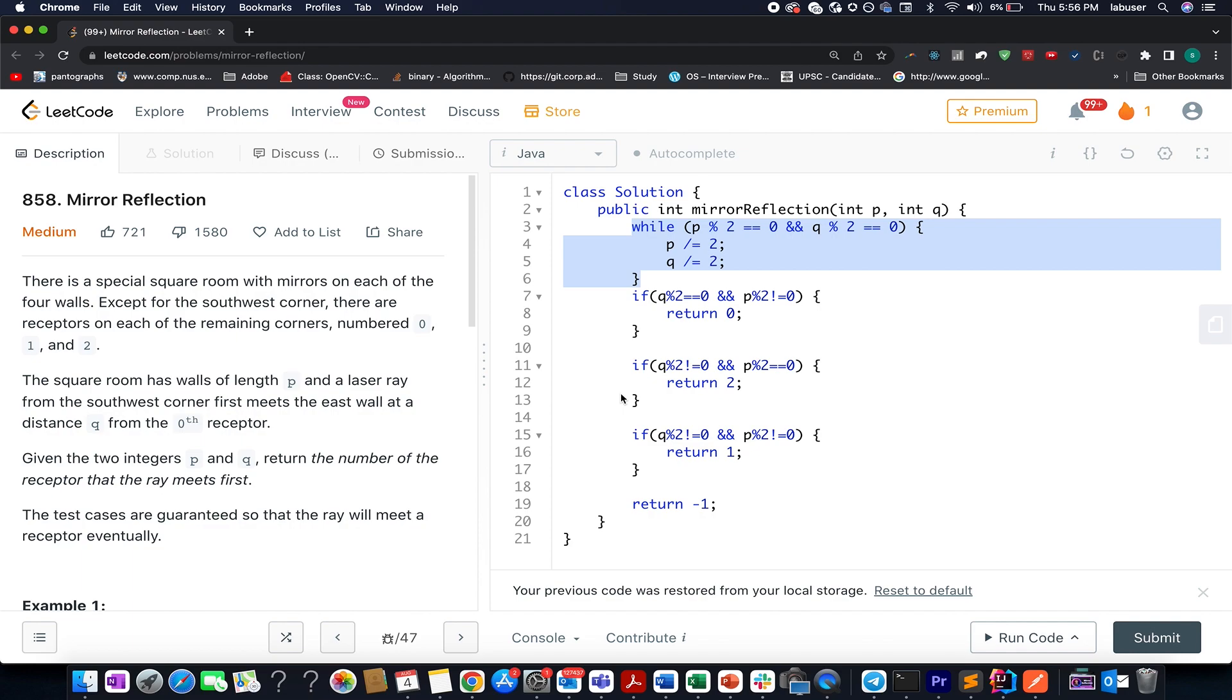In order to conclude it up, let's quickly walk through the coding section. So if we carefully analyze from line number seven to line number 17, you will see that these are the same three statements that I talked in the presentation. These are the three test cases. If q happens to be even and p happens to be odd answer would be zero. If q happens to be odd and p happens to be even the answer is two. If q and or both are odd, the answer is one. And before that,